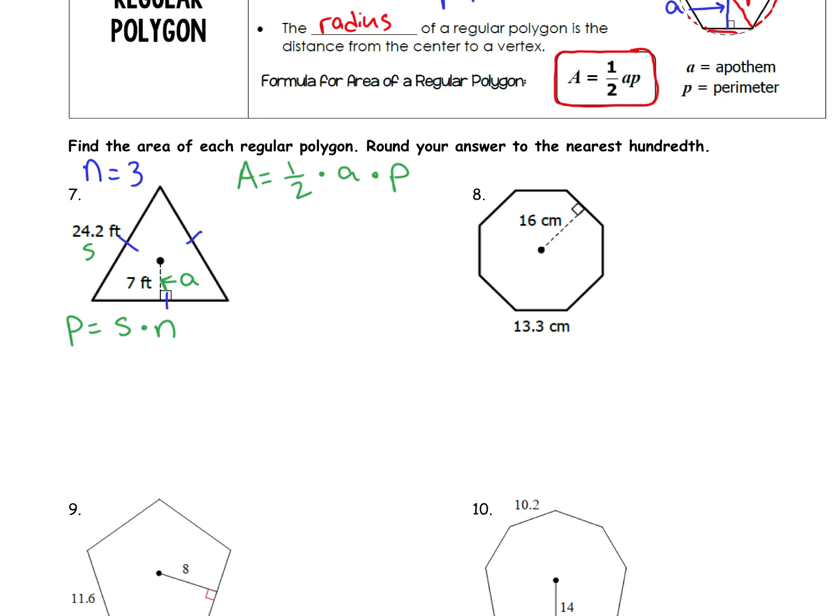When I go to find the perimeter, perimeter is equal to the side length, S, which is 24.2, times the number of sides, 3. So this time around I have to calculate the perimeter before I can even actually find the area. 24.2 times 3 is 72.6. And with that, I have everything I need to actually find area now. Area is equal to 1 half times the apothem. We already found the apothem. It's the 7. Times the perimeter, which we just calculated. 72.6.